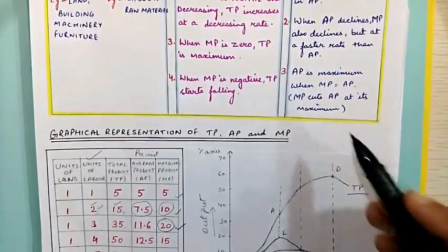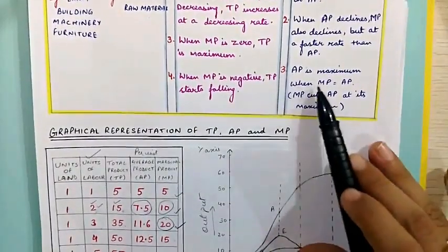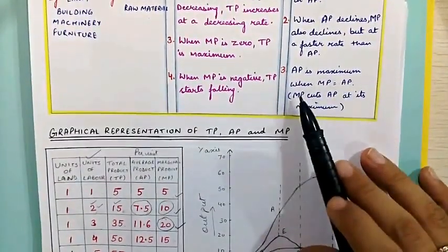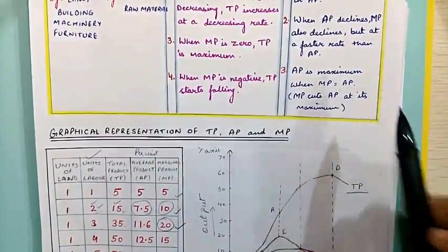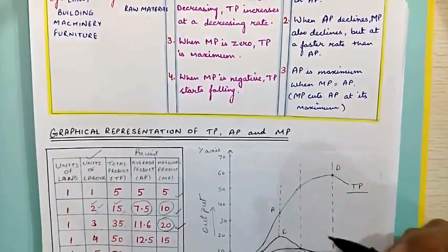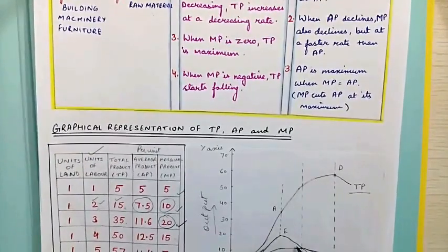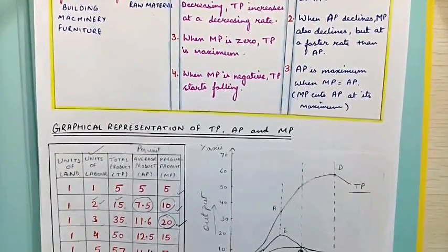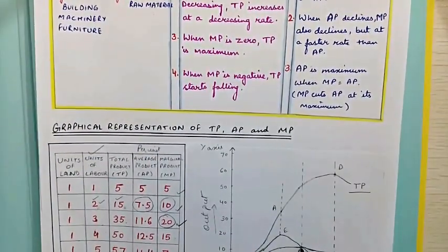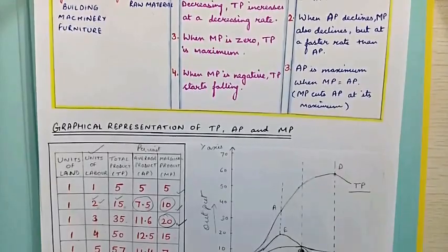The last point: AP is maximum when MP is equal to AP. At the point where marginal product and average product are equal, this is the highest point of average product.